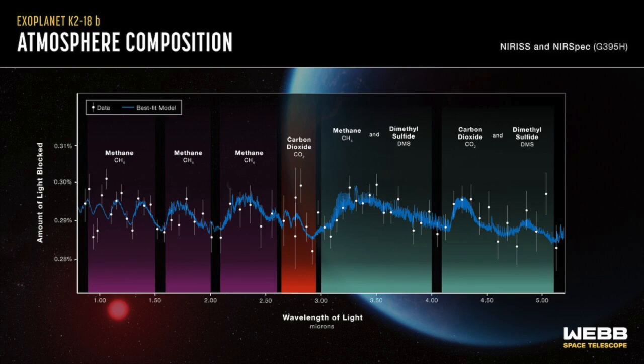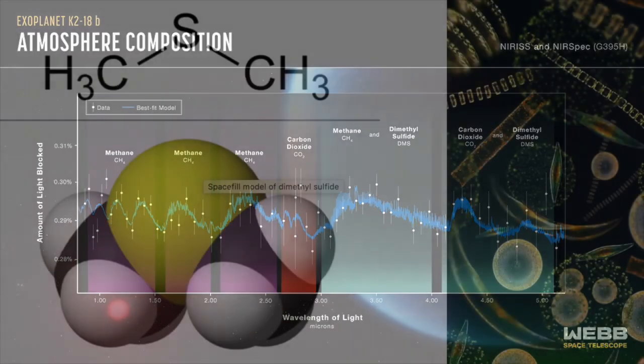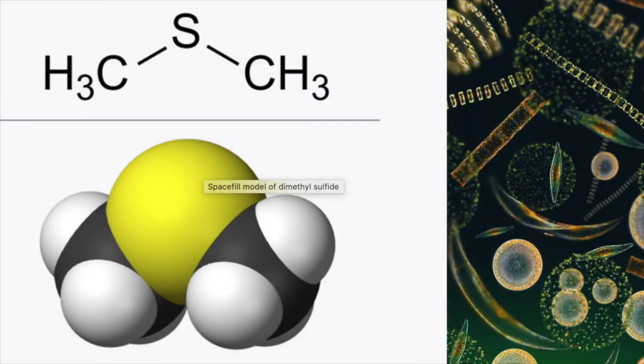After several analyses, the researchers concluded that the signal could be caused by a substance called dimethyl sulfide. On Earth, DMS is produced naturally in only one way: by living things, mainly microbial life such as marine phytoplankton.